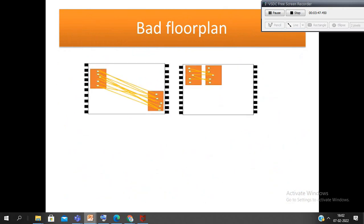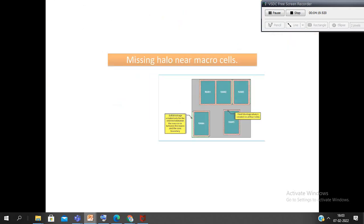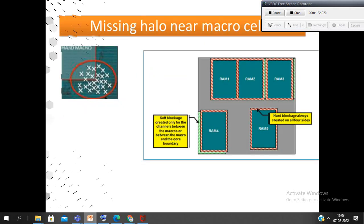Bad floor planning means improper macro placement and macro channels. Sometimes it may happen we place the macros in the middle of the floor plan, so that may cause some congestion issue. Also, floor planning the macros without giving the routing space for interconnection between the macros can cause the congestion. And if we place so many cells near to the macro, then also it will cause congestion.